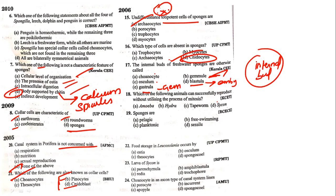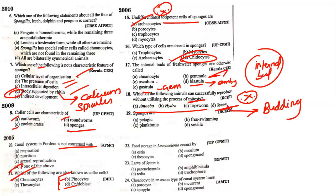Which animal can successfully reproduce without utilizing mitosis? This is very important — students usually get it wrong. The answer is Sycon. Sycon will not undergo mitosis; all others will. Sycon undergoes budding. You might ask: hydra also undergoes budding — but the surface of hydra undergoes mitosis after the bud separates. Sycon is attached to the substratum, so there is no requirement for mitosis.